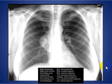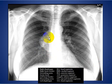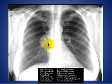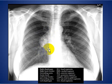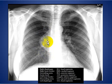We can also apply the silhouette sign to masses. Here there is a soft tissue mass on the right side obliterating the region of the ascending aorta, so this mass is located anteriorly in the anterior mediastinum. As we know, the differential diagnosis of masses in the anterior mediastinum includes teratoma, thymoma, retrosternal goiter, and lymphoma.